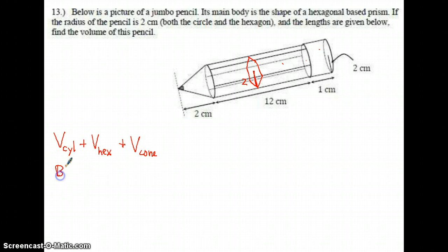This cylinder is area of the base times height. The hexagon is area of the base times height. The cone is one-third of its base times the height. In the cylinder, we're talking about pi r squared, where the radius is 2. The height of that is 1.